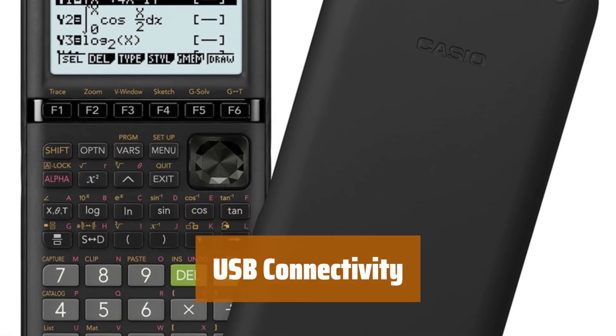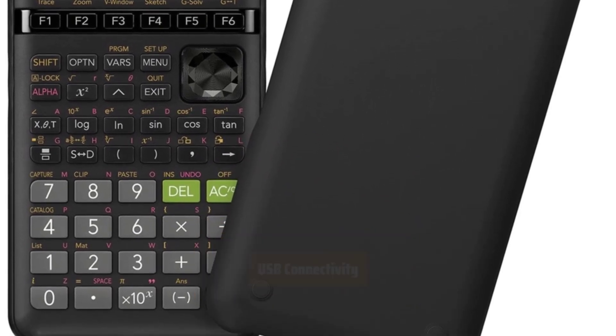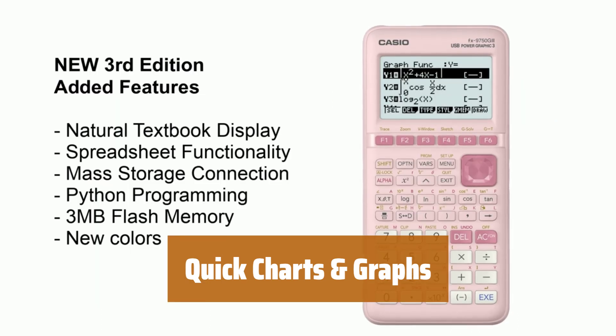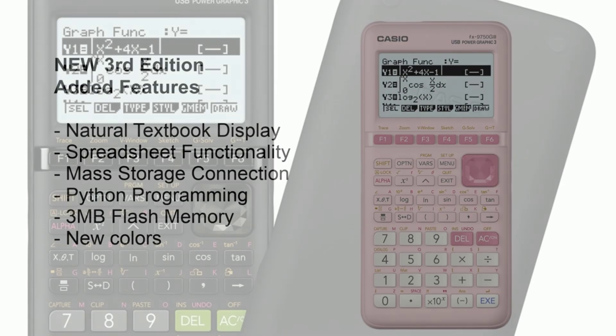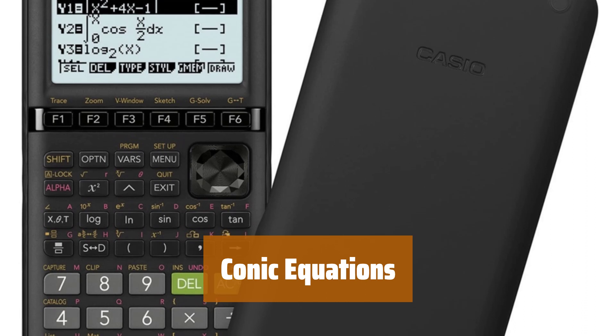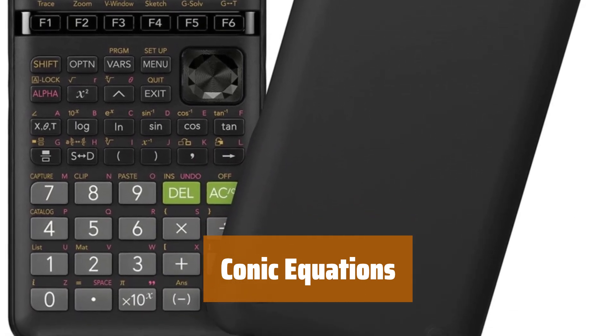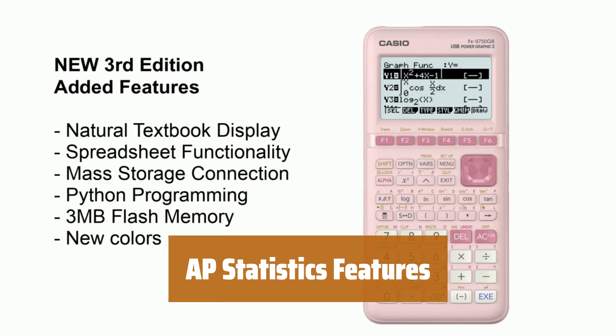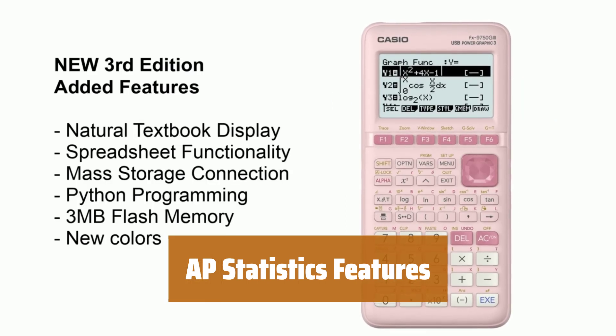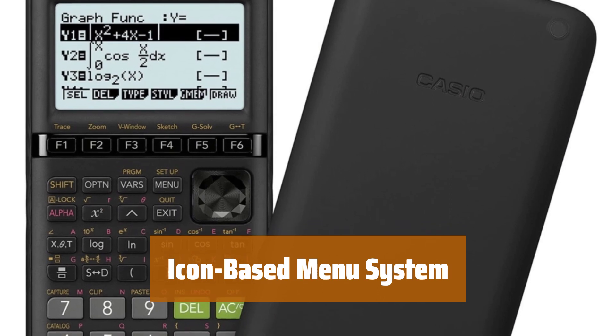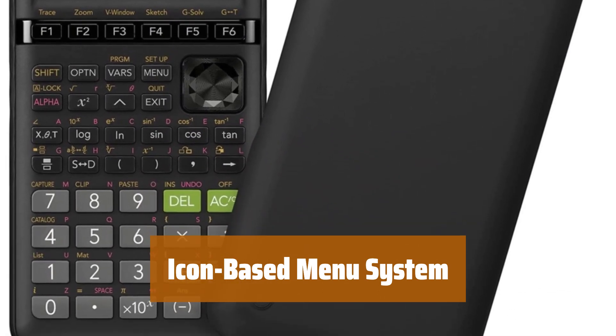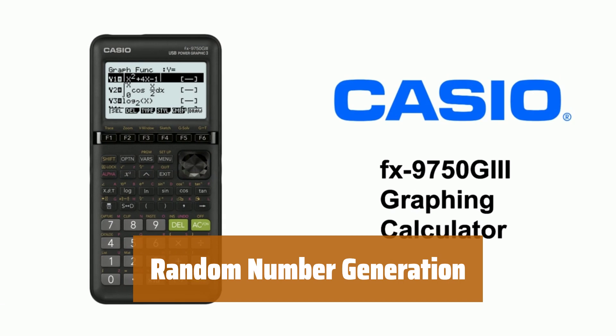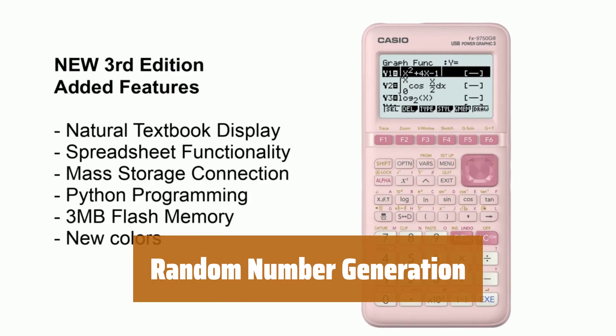Easily share files and data with others using the USB connectivity feature. Create pie charts and bar graphs quickly and efficiently to visualize data. Access built-in conic equations for advanced mathematical calculations and graphing. Utilize the AP statistics features to analyze and interpret data for your studies. Navigate through functions easily with the intuitive icon-based menu system. Generate random numbers for simulations and experiments with the random number generation feature.